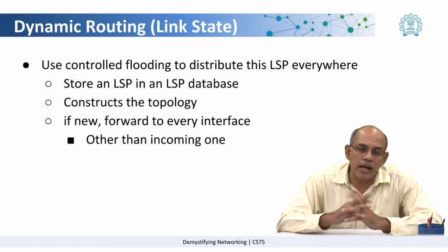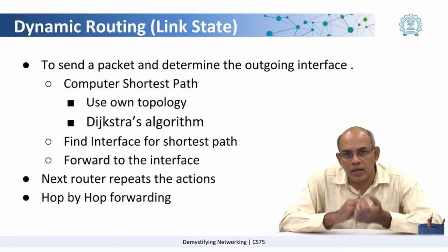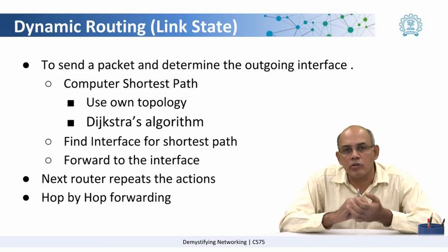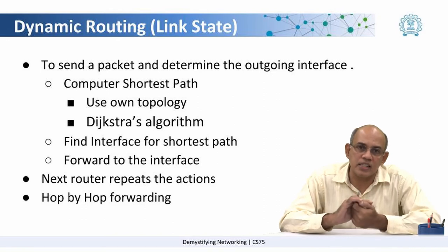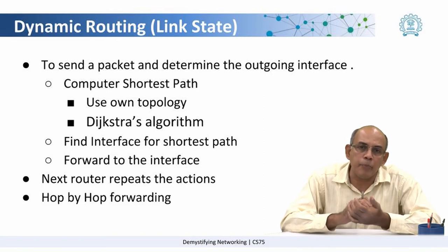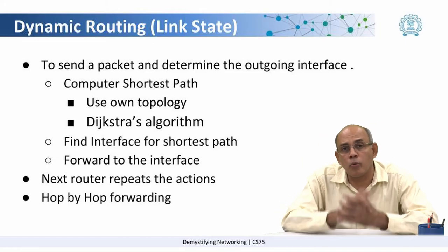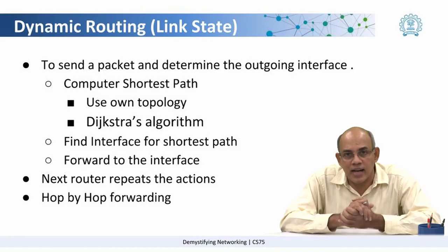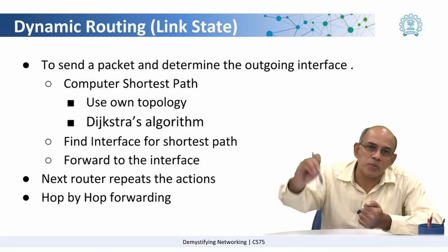Once each router has the topology of the network, in order to send a packet from one of its incoming interfaces and determine the correct outgoing interface, the router looks at the destination address on the packet and computes the shortest path to that destination through the topology it has. It uses Dijkstra's shortest path algorithm to compute the shortest path to the destination.